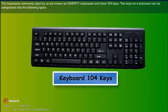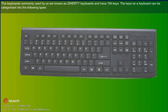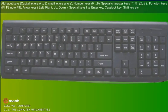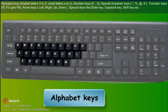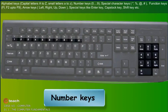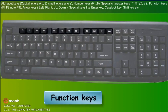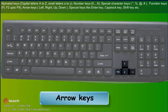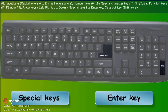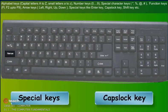The keys on a keyboard can be categorized into the following types: alphabet keys (capital letters A to Z, small letters a to z), number keys (0 to 9), special character keys (such as *, %, @, #), function keys (F1, F2 up to F9), arrow keys (left, right, up, down), and special keys like Enter, Caps Lock, Shift, etc.